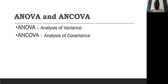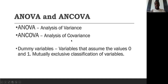ANOVA is an acronym for analysis of variance, and ANCOVA is an acronym for analysis of covariance. We also have what we call dummy variables — variables that assume the values of zero and one. We normally say they are mutually exclusive classifications of variables.